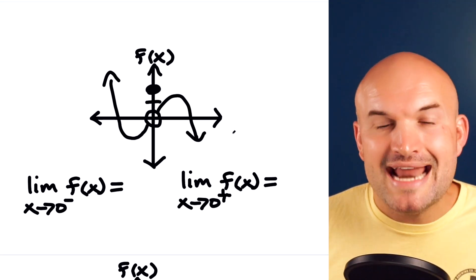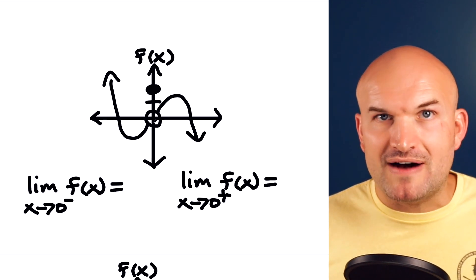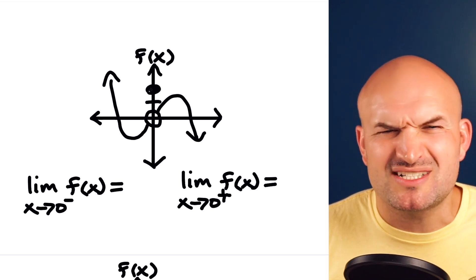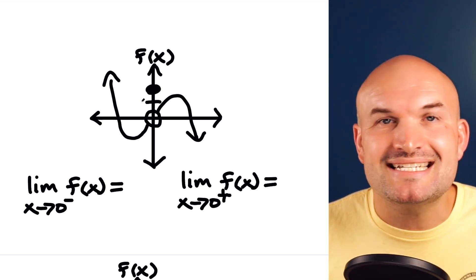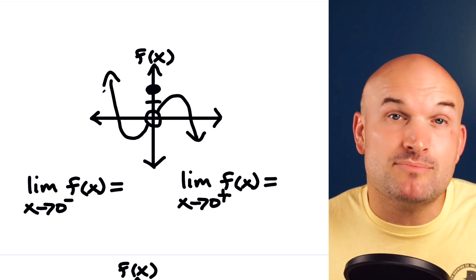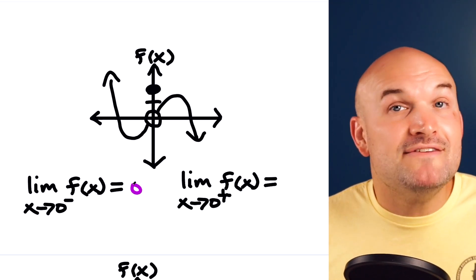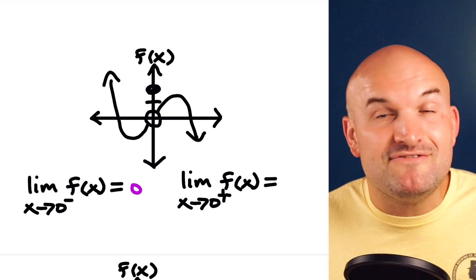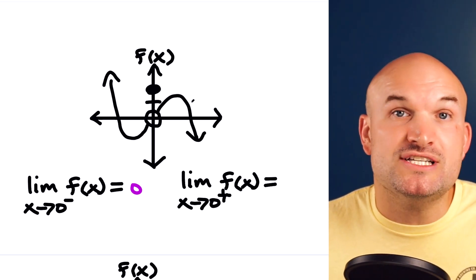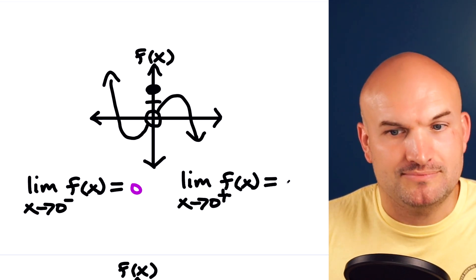In a very similar example, now I have the function being defined — previously it was undefined, but now the function is defined up here at two. But that does not matter — do not get tricked. As my graph is approaching zero from the left, it is approaching zero. Even though the function is defined at two, the graph is approaching zero. And as my graph is approaching zero from the right, it is also approaching zero.